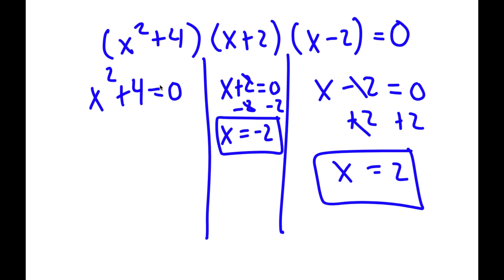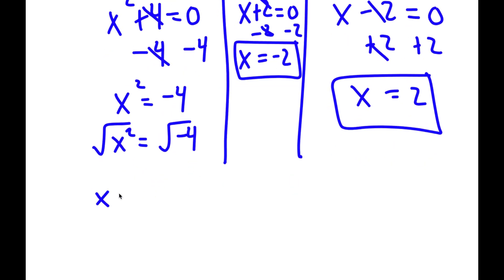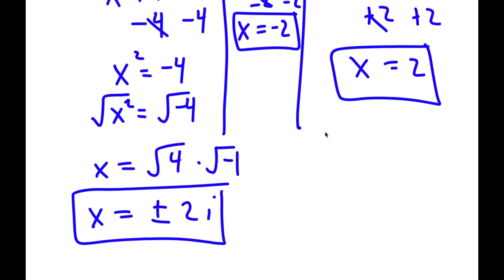Finally for x squared plus 4 equals 0, I subtract 4 on both sides to get x squared equals negative 4. Taking the square root on both sides, the square root of x squared is x, and the square root of negative 4 can be rewritten as the square root of 4 times the square root of negative 1. The square root of negative 1 is i, so I get positive or negative 2i. These are my four solutions.